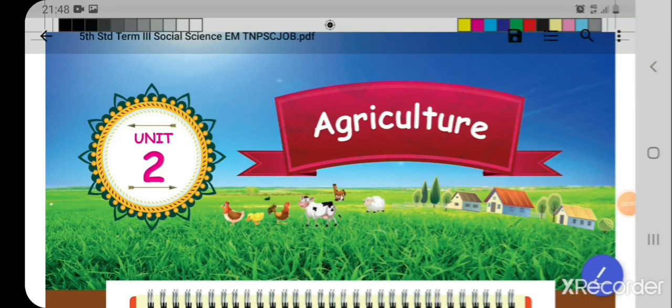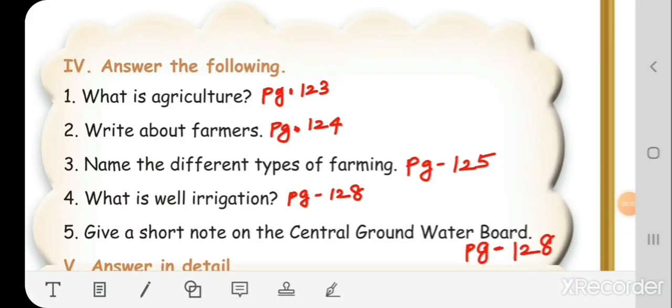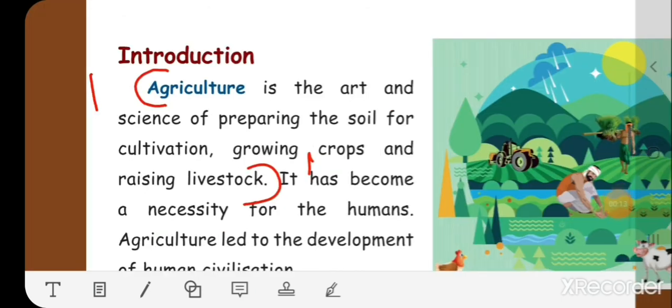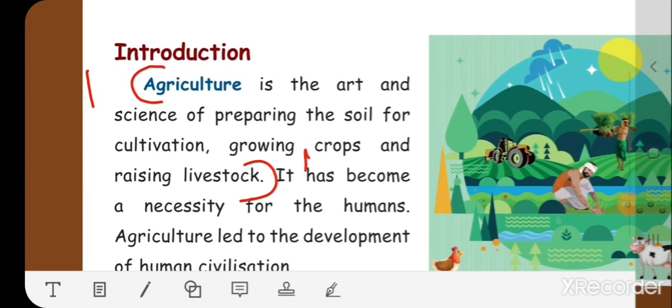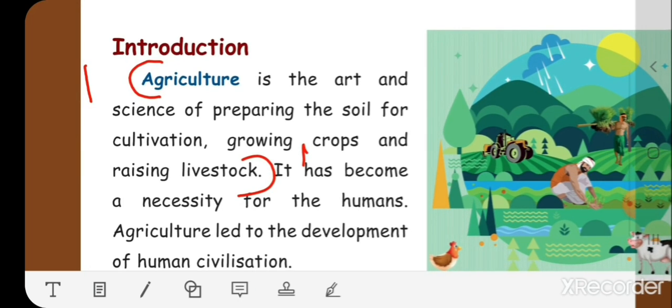You need the agriculture book back evaluation for answering the following questions. First question: What is agriculture? This answer is on page number 123. Agriculture is the art and science of preparing the soil for cultivation, growing crops, and raising livestock.